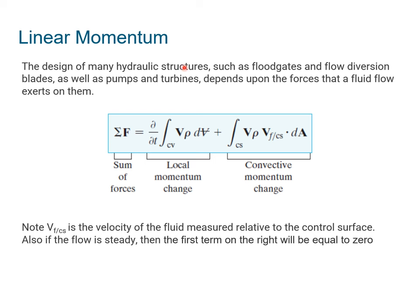So first, let's discuss linear momentum. The design of many hydraulic structures such as floodgates, flow diversion blades, as well as pumps and turbines, depend on the forces that a fluid flow exerts on them. So again, here, we've taken Newton's second law. We've rewritten it in terms of control volume. So we'll have the sum of forces equal a local momentum change that occurs inside the control volume. And then we'll have what's known as the convective momentum change that occurs to the boundary itself.